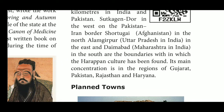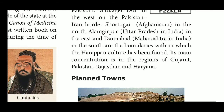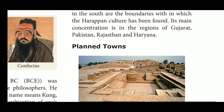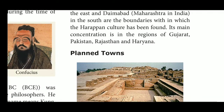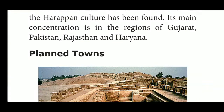The major cities of the Indus civilization include Harappan, Mohanjodaro, Dholavira, Kalibangan, Lothal, Banawali, Rakhigarhi, and Sutkotada.